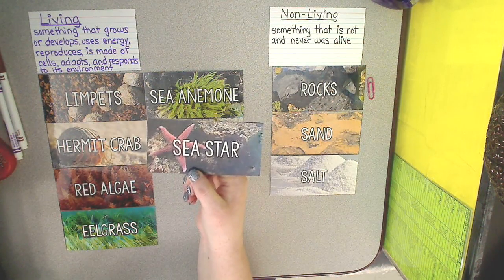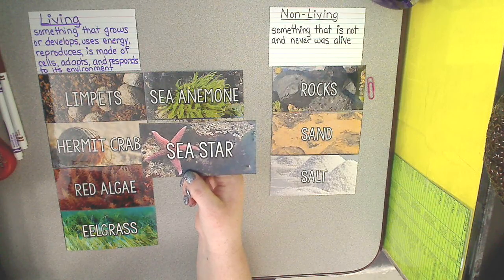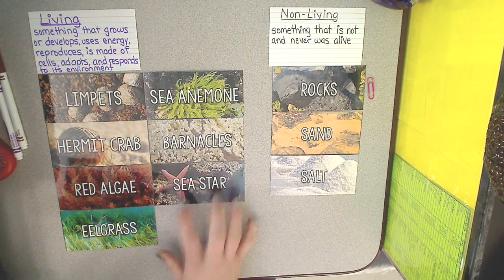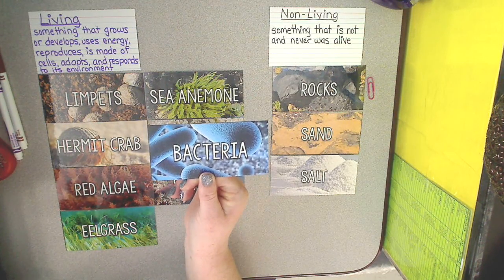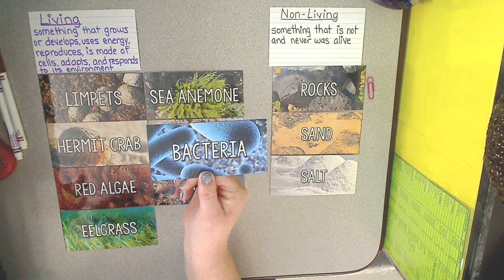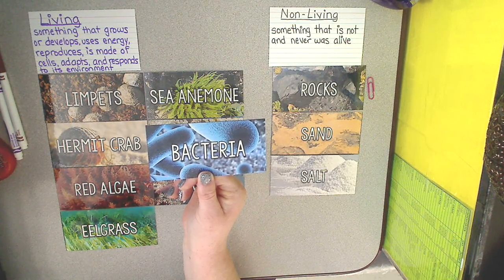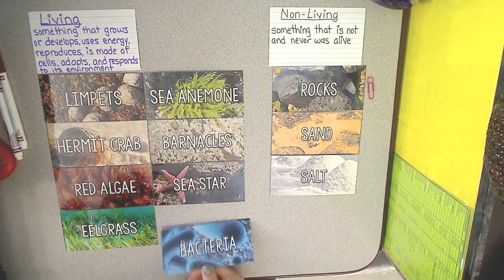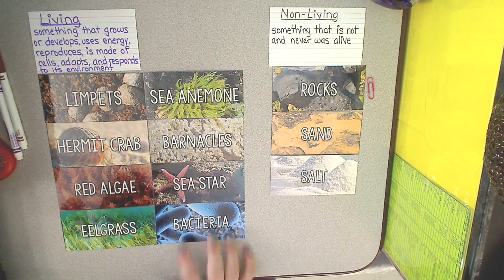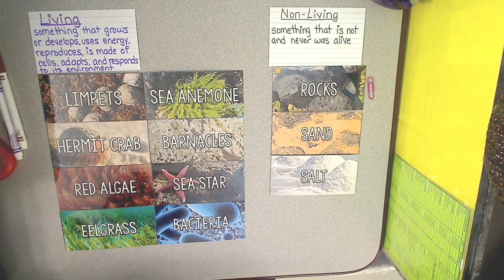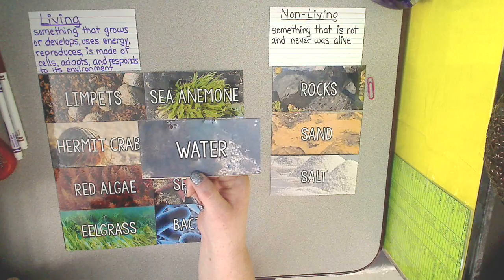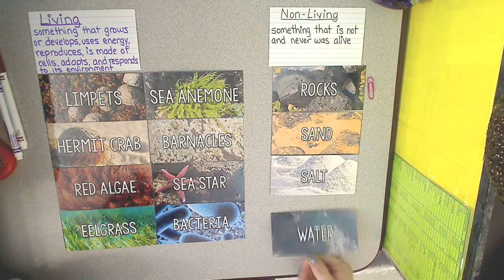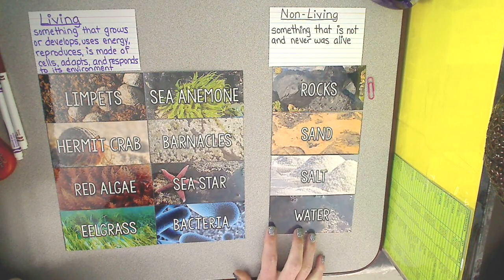What about a sea star? Sea stars are living. What about bacteria? Very, very tiny — we can't see them — is that going to be living or non-living? They are living. Bacteria grow, they reproduce, they adapt — they are living. Now last but certainly not least is water, and we know that water in and of itself is non-living.